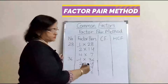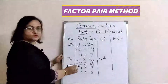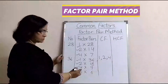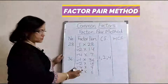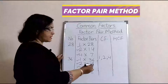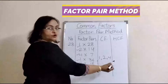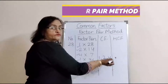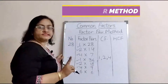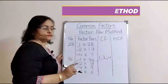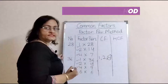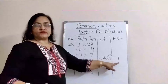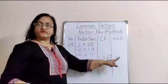1 is common. 2 is also common. 4 is also common. No other number is common. So the common factors are 1, 2, and 4. The highest among them is 4, so our highest common factor is 4.